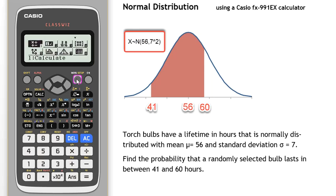We first go to the menu, and we want number 7, which is distributions, and then we want number 2, which is the normal cumulative distribution.